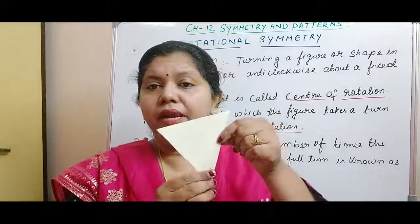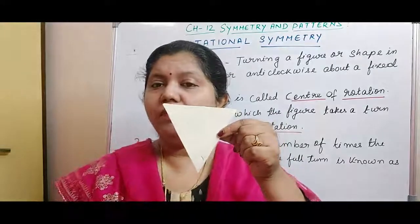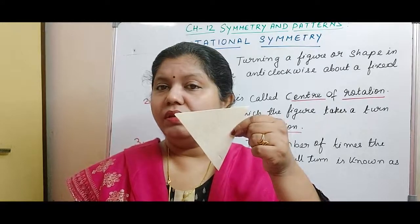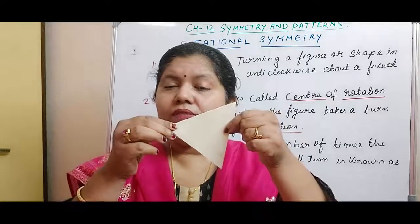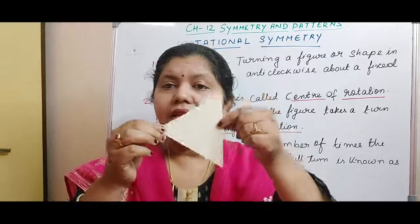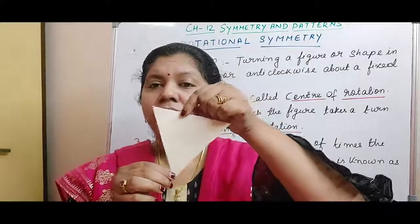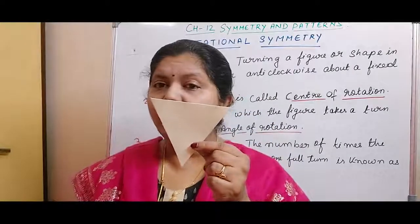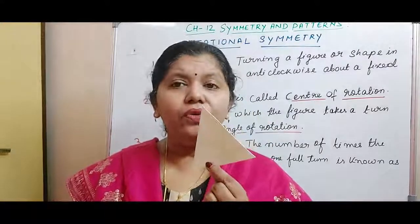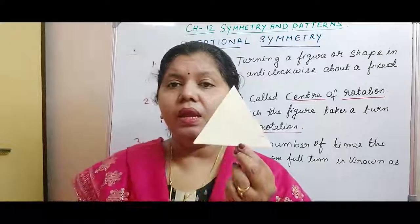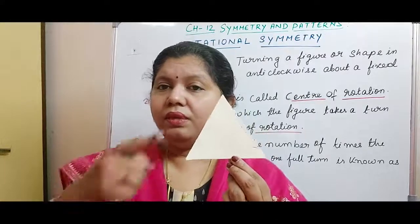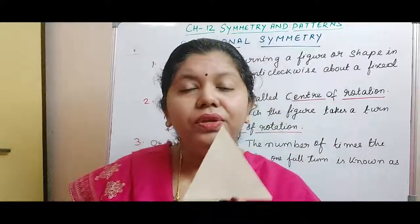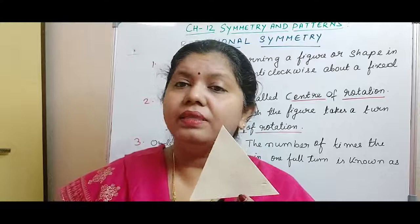Suppose I turn it by 90 degrees — is the shape coming to its original form? No. The vertices were in this position before and now the position has changed. If I tilt it by 180 degrees, still it is not coming to its original form. Is there any order of rotation for this? Now, 360 degrees has three segments — three line segments. If you divide 360 degrees by 3, what are we going to get? The answer is 120 degrees.